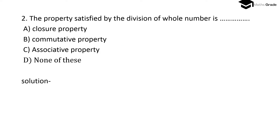Question number 2: The property satisfied by the division of whole numbers is — closure property, commutative property, associative property, or none of these? Division of whole numbers satisfies none of these properties, for example 1 divided by 0 is undefined. So option D, none of these, is the correct option.